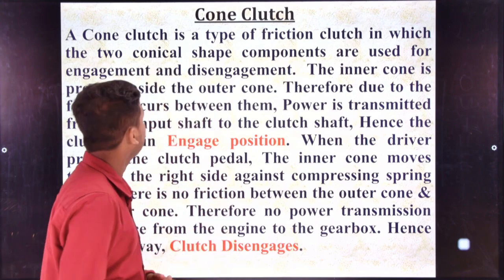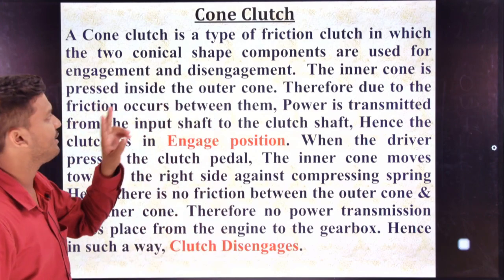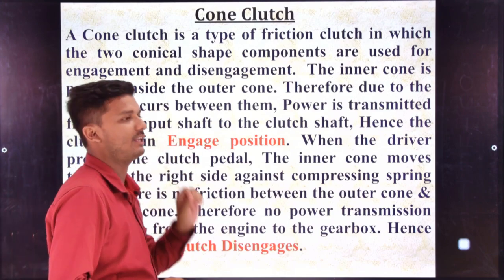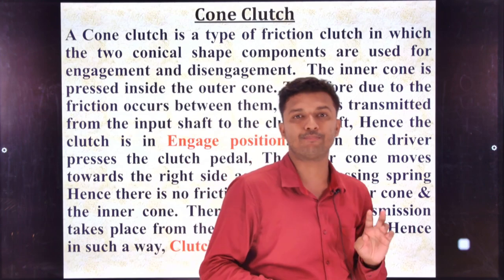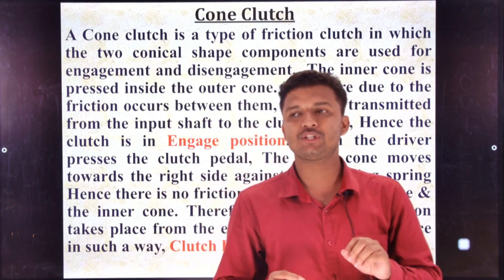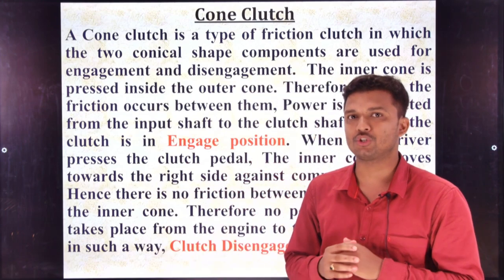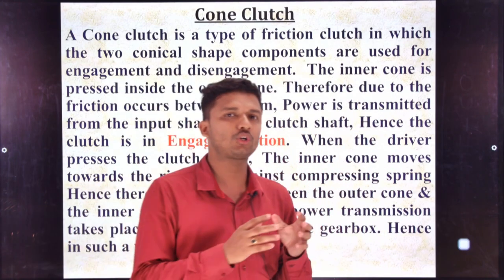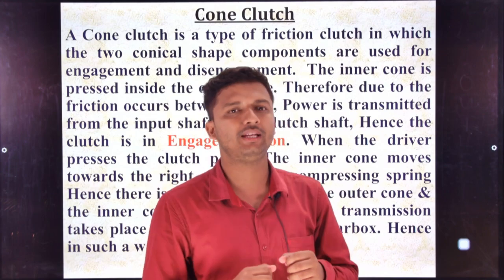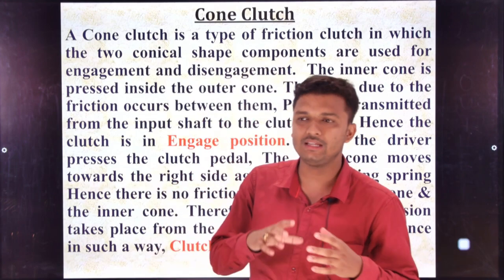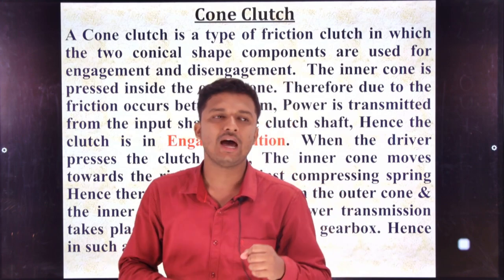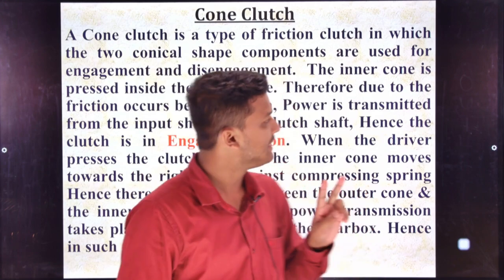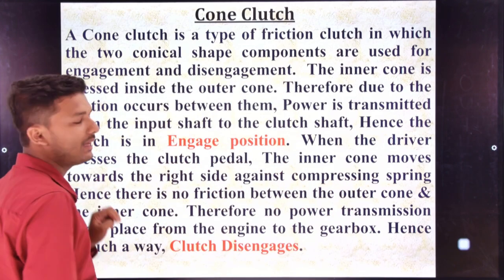A cone clutch is a type of friction clutch in which two conical shape components are used for engagement and disengagement. There are two conical shape structures: an inner cone and an outer cone. The inner cone system is cone-shaped, and the outer core system is also a cone-shaped structure — that is why it is known as a two conical shape structure.